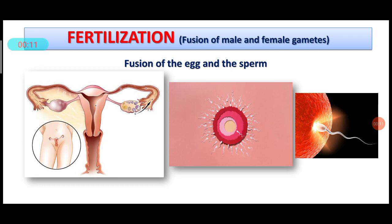Today we talk about fertilization in human beings. At the time of fertilization, the male releases sperms into the vagina. The sperms then start moving towards the uterus and enter it. At that time, suppose one egg has been released from the ovary and has reached the oviduct.